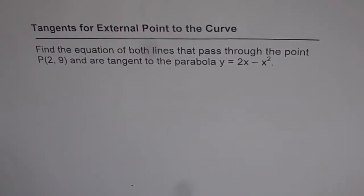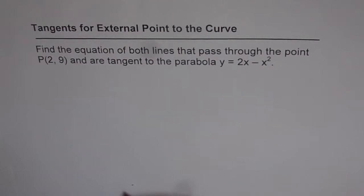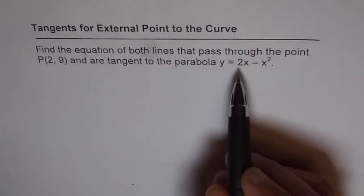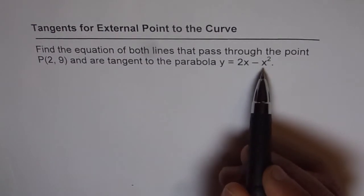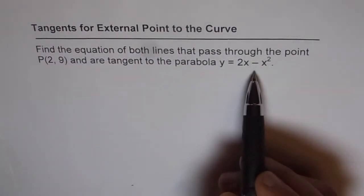Tangents for external point to the curve. Find the equation of both lines that pass through the point P and are tangent to the parabola y = 2x minus x squared. This is a very typical equation and very different from what you have been doing so far. Till now you have been finding the equation of a tangent line when a point was given on the curve. This time we are given a point P(2,9) which is not on the curve, and therefore we can have two tangents from this point to the parabola.